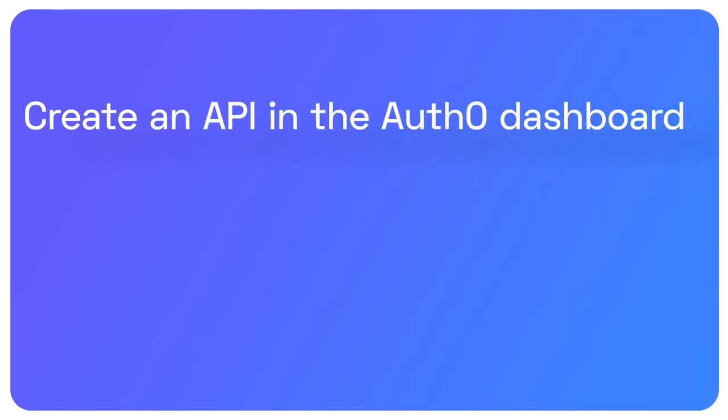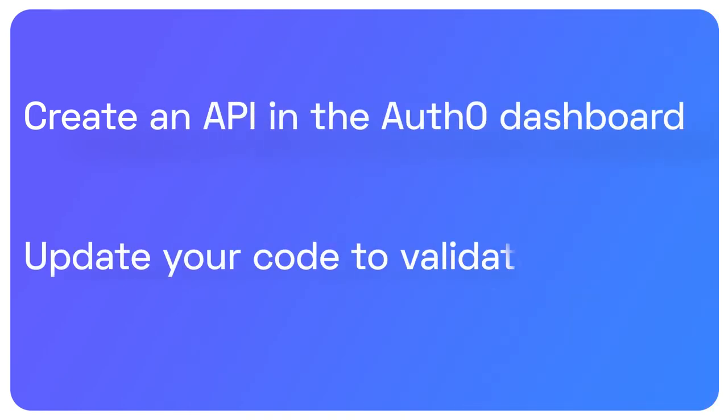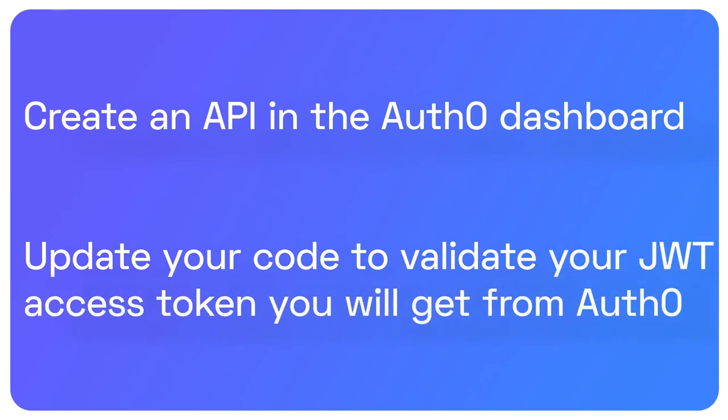Protecting your endpoints will guarantee that only parties with a valid access token can access those endpoints. In this case, an access token will be provided by Auth0. To use Auth0 to protect your endpoints, you need to first create an API in the Auth0 dashboard, and second, update your code to validate the JWT access token you will get from Auth0.